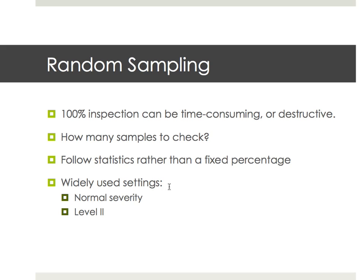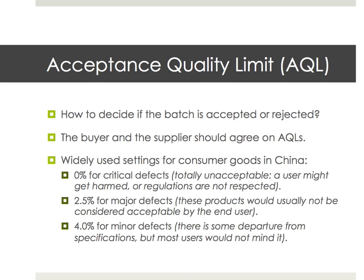In this video we are going to apply the widely used settings: normal severity and level 2. We will not go into the other types of settings. So as we said, the first question is how many samples to check, and the second question is: what are the rules for accepting or rejecting the batch? That's what we call the AQL.